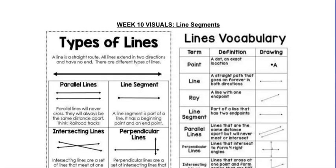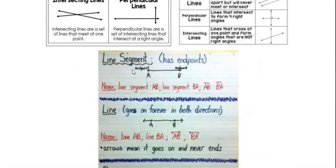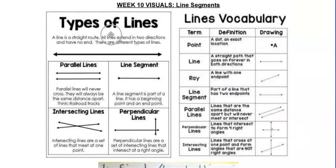Hi ladies, we are on week 10 in your packet, so this week you're going to be talking about line segments and different types of lines. On the first page — page 14 in your packet — you have a couple different visuals that you can look at. This goes through different types of lines. A reminder: a line is a straight route that goes in both directions, with arrows showing it keeps going left and right, never ending.